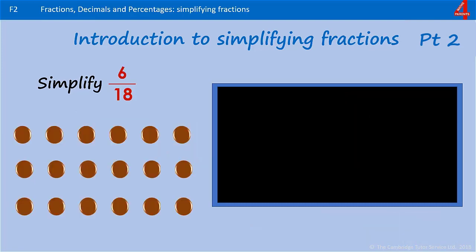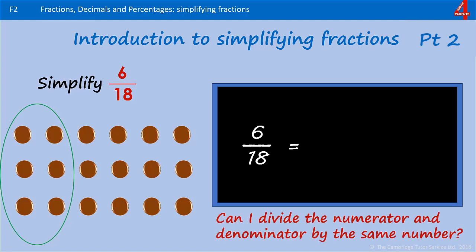Pause the video, have a go at this one. Simplify 6 eighteenths. 6 out of 18 — what can we divide both those numbers by? I'm going to start by dividing them both by 2, because I can see they're both even numbers.